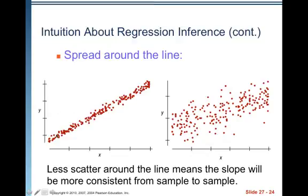Less scatter around the line means the slope will be more consistent from sample to sample. So here we have an example where there's not much scatter about the line. And then to the right of it, we have an example where there is a lot of scatter around the line. So the SE value, the standard deviation of the errors is going to be smaller on this graph on the left versus the standard error, the standard deviation of the error for this graph on the right.